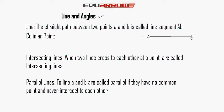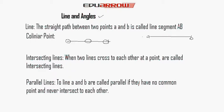Collinear points: three or more than three points are said to be collinear if there is a line which contains them all. Suppose A, B, and C are three points. When we join all the points by a straight line, these points are called collinear points.